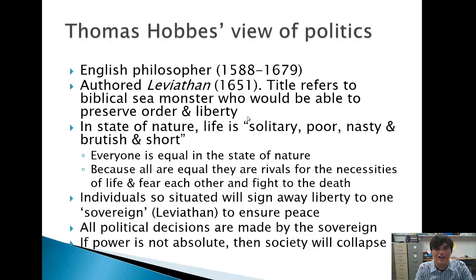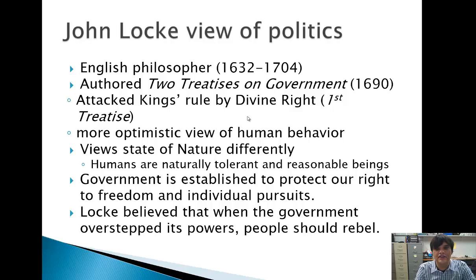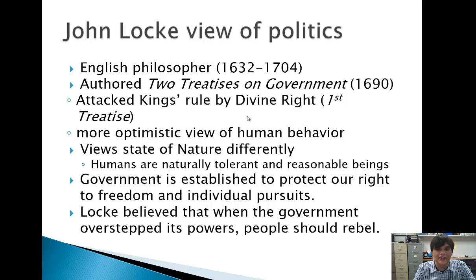We tend to hear more about John Locke than Thomas Hobbes. John Locke was also an English philosopher who lived from 1632 to 1704, so there was some overlap between Locke and Hobbes. John Locke authored the Two Treatises on Government, in which he really attacked the king's rule by divine right. He didn't think the monarchy should continue to be filled based on divine right. Despite the Magna Carta in England centuries earlier, many monarchs were still based on blood lineage and nobility, and Locke really didn't like the idea of filling the monarchy based on divine right.